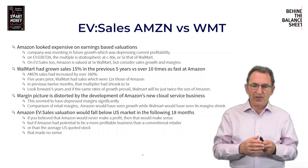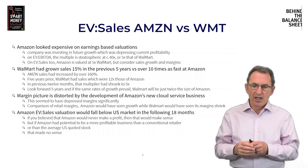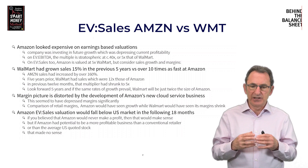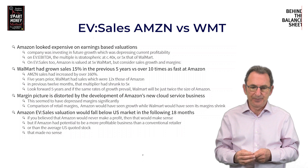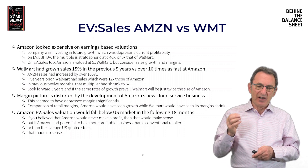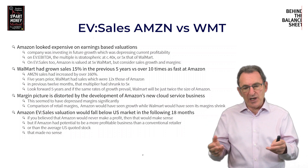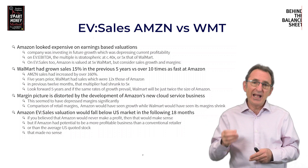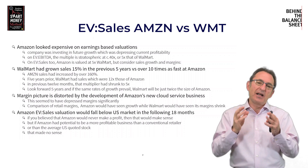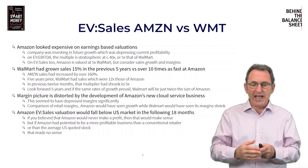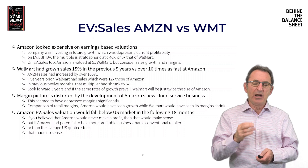Amazon looked expensive on earnings-based valuations, but Walmart had grown its sales at only 15% in the previous five years versus over ten times as fast for Amazon. The margin picture had been distorted by the development of AWS. I projected that Amazon's EV to sales would fall below the US market in the following 18 months. If you believed Amazon would never make a profit, trading at a premium made sense — but if Amazon had potential to be more profitable than a conventional retailer, or if it would continue growing faster, it made no sense at all. EV to sales is a super powerful measure, and it's really worth looking at.